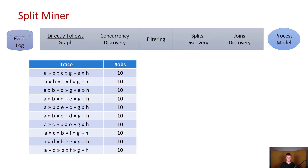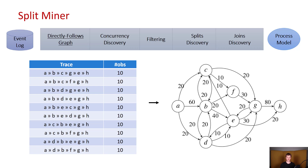Here we have an example event log with multiple traces where each trace occurs 10 times. This is going to give us a directly follows graph, where we can see all the relations represented along with their frequencies.